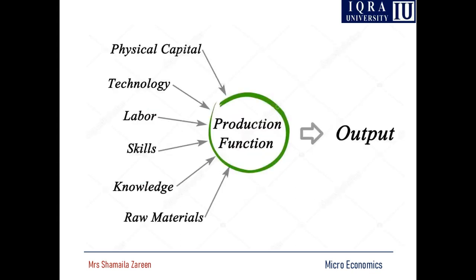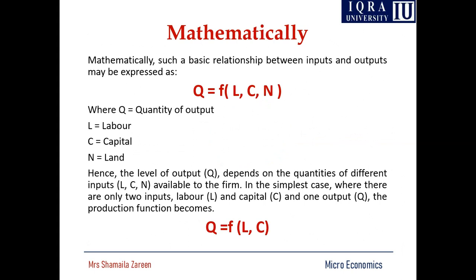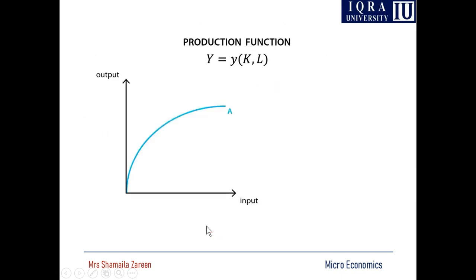The production function depends on input and output. The inputs you use include physical capital, technology, labor, skills, knowledge, and raw materials — these are all inputs from which you produce output. Mathematically, the relationship between inputs and outputs can be expressed as: quantity is a function of labor, capital, and land, written as Q = f(L, C). We are mostly concerned with labor and capital.